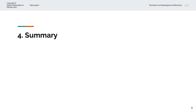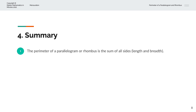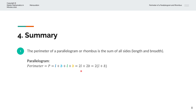To summarize, the perimeter of a parallelogram or rhombus is the sum of all sides — length and breadth. For a parallelogram, perimeter P equals L plus B plus L plus B, or 2 times L plus 2 times B, or 2 into (L plus B). For a rhombus, perimeter P equals S plus S plus S plus S, or 4 times S.